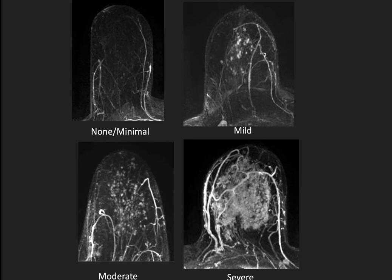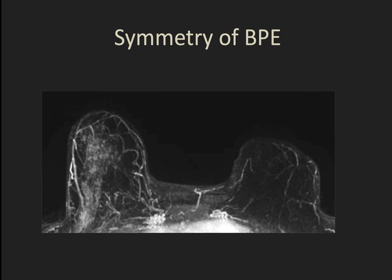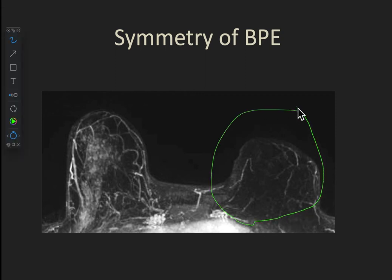The MIP images are another great way of looking at the amount of BPE — and these are all subtraction images, obviously. Here's a patient who has asymmetric BPE; the others all had pretty symmetric BPE. In this case it was because in their left breast they'd had prior radiation treatment and they're premenopausal, so that breast was not enhancing.